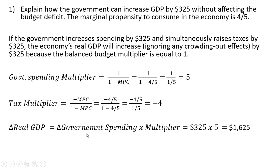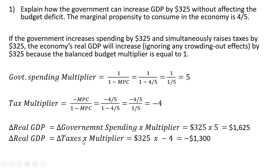On the other hand, we are increasing taxes, and that will have a negative effect on GDP. To figure out that negative effect, we're going to look at the change in taxes and multiply that by the tax multiplier. In this problem, if we raise taxes by $325 and multiply that by minus 4 for the tax multiplier, GDP would fall by $1,300.